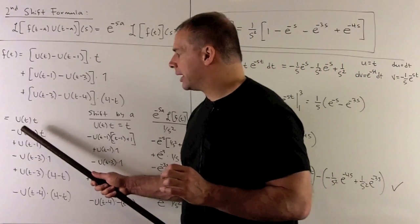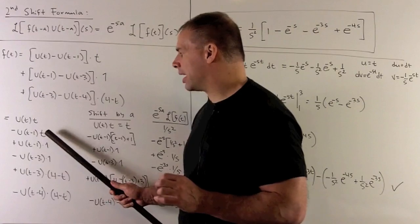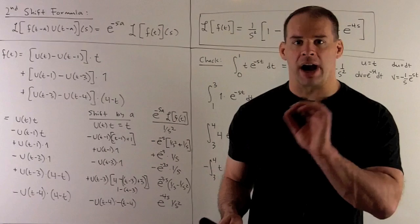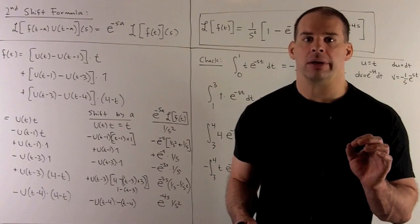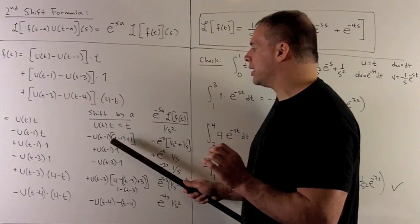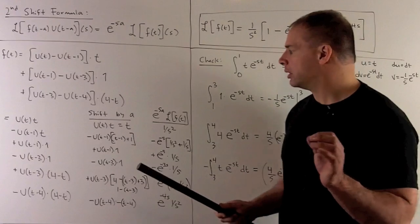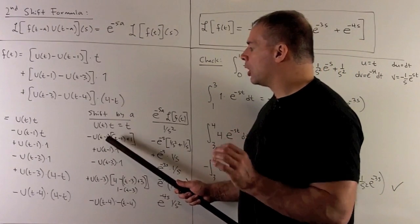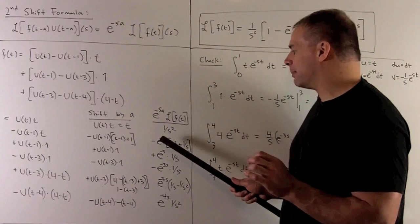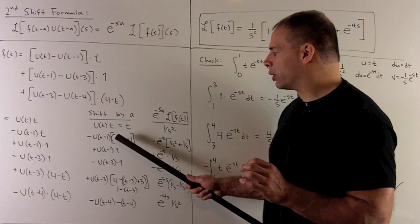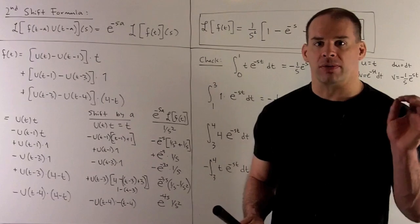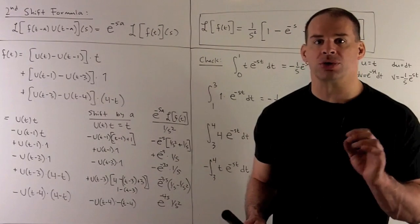Next term: minus u(t minus 1) times t. The t is not shifted correctly, so we rewrite it as (t minus 1) plus 1, thinking of t minus 1 as a new variable. The shift is a equals 1, giving a factor of e to the minus s. The Laplace transform of the (t minus 1) part, treated as just t, gives 1 over s squared, and the constant 1 gives 1 over s. The next term, u(t minus 1) times 1, has no t to shift. With a equals 1, we get e to the minus s times 1 over s.